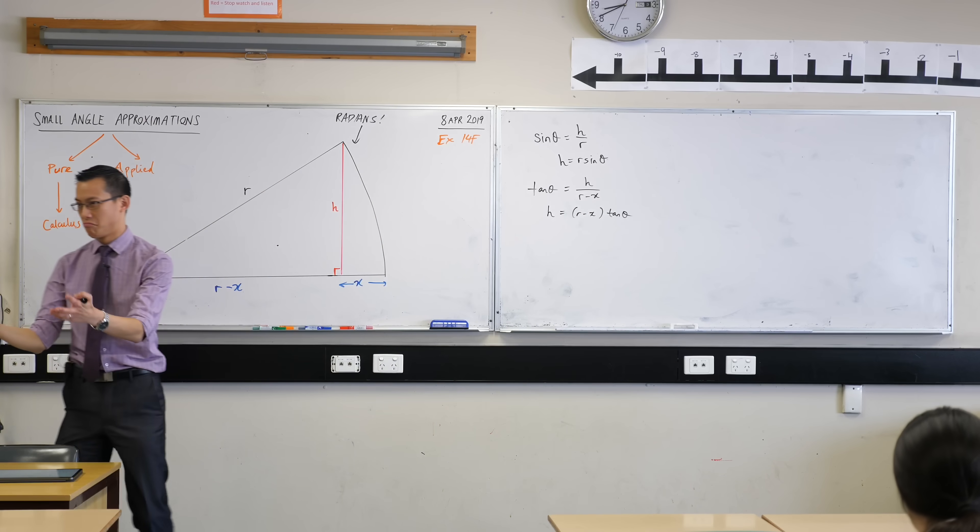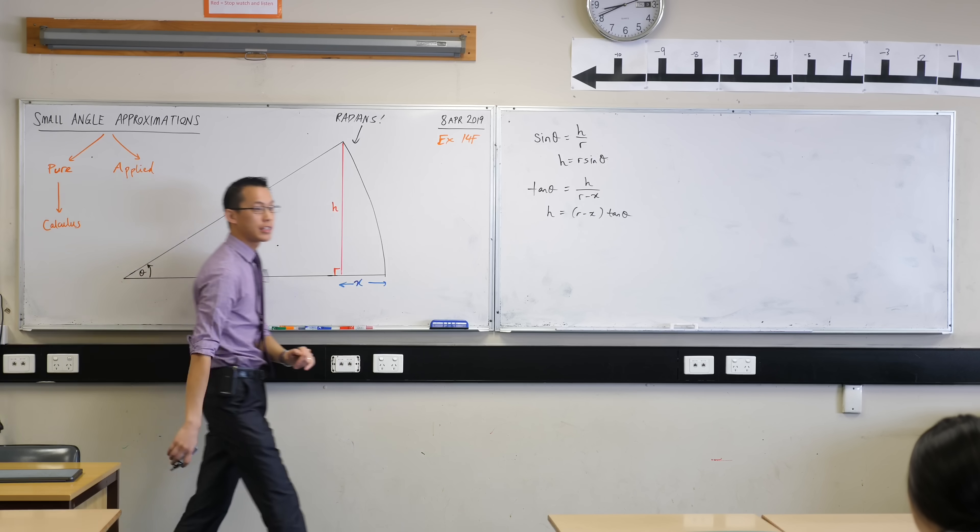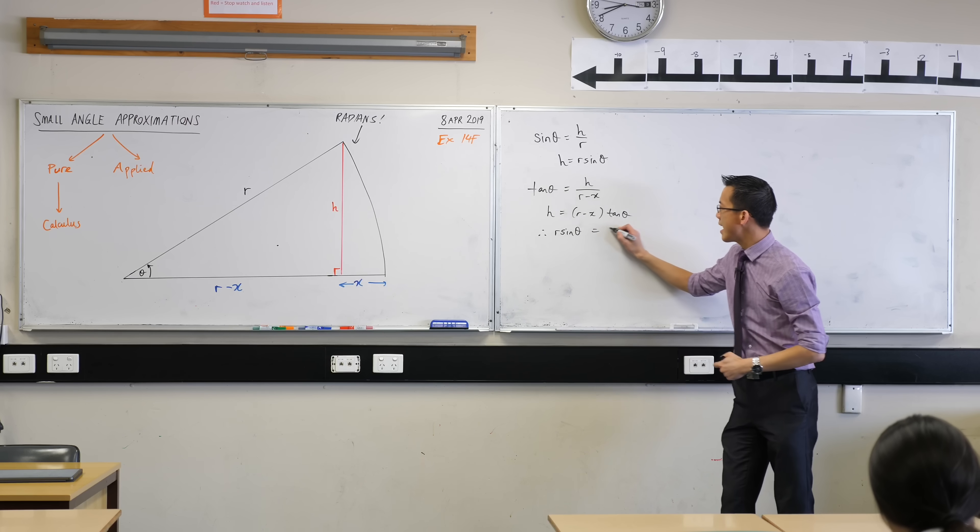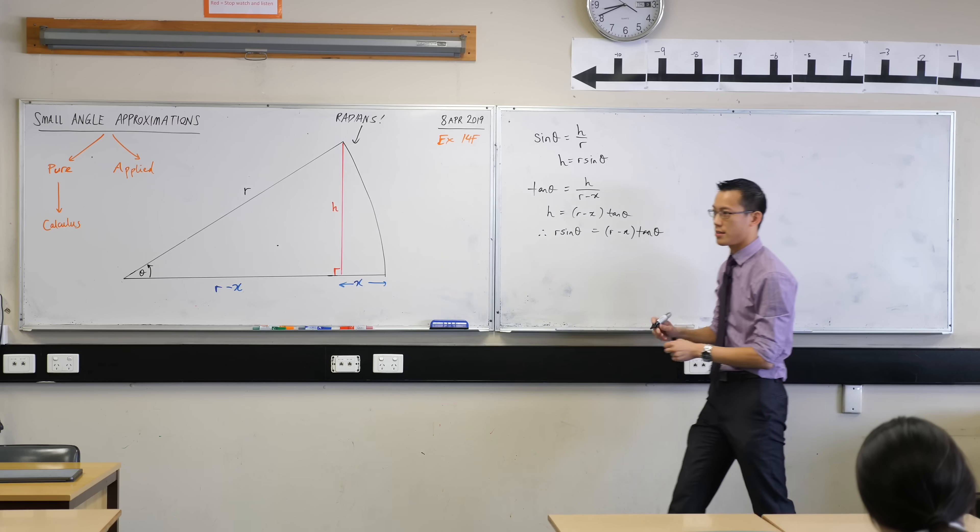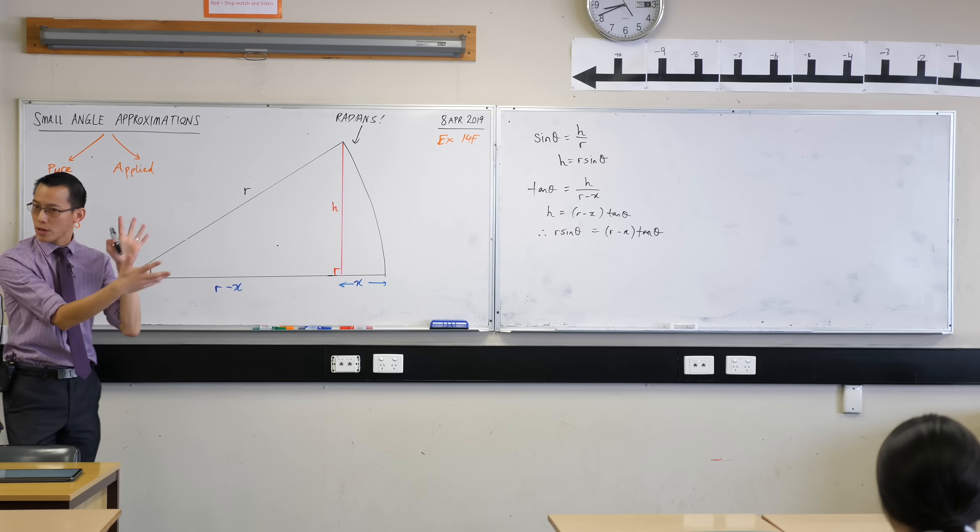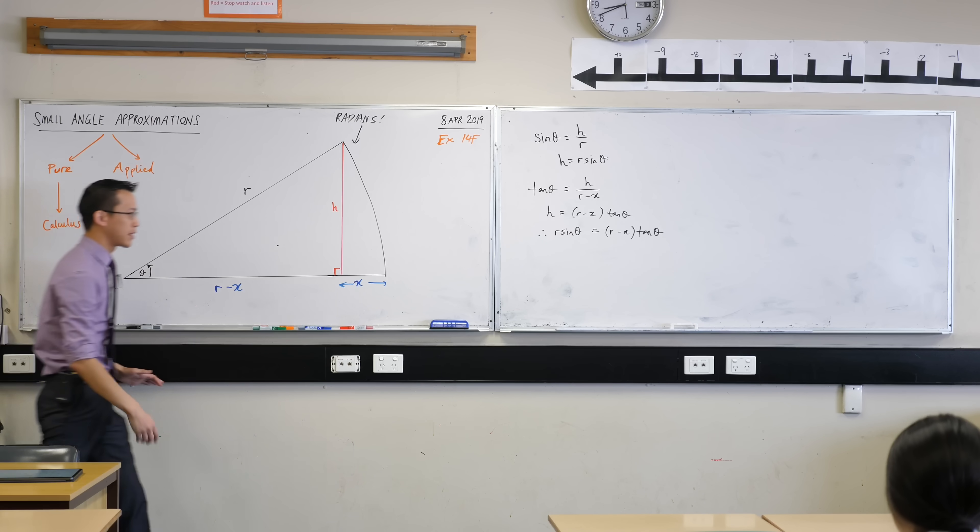Now, nothing particularly groundbreaking so far, but you notice that I have the same length, H, expressed in two different ways, so I can actually equate those. I can say, therefore, R sine theta and R minus X tan theta, these are the same thing, just looked at in two different ways. Now, why would I bother doing this? Well, see my diagram. See how it's so comically large. The reason it's comically large is because I use this meter rule for this very specific reason.